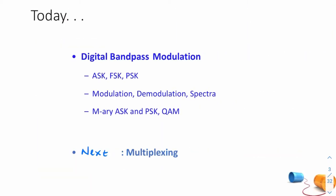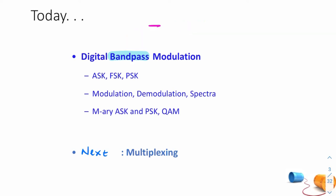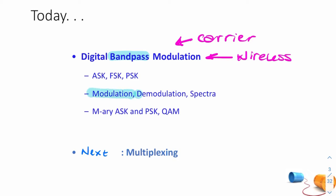Today we're going to be looking at digital modulation. I use the word bandpass to distinguish it from baseband — in lecture 10 we looked at pulse modulation, which was baseband, and now we're looking at bandpass modulation, where we actually have a carrier. This is generally going to be wireless communication. We'll cover modulation, demodulation, and frequency domain representation, then look at versions of amplitude, frequency, and phase modulation with multiple levels — referred to as M-ary.